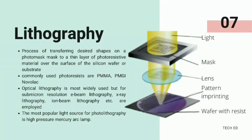Lithography is one of the most common semiconductor and MEMS fabrication technique processes. It is the process of transferring desired shapes on a photo mask to a thin layer of photoresistive material, commonly PMMA or NOVALEC, over the surface of the silicon wafer or substrate. Optical lithography is most widely used, but for submicron resolution, E-beam lithography, X-ray lithography, and ion-beam lithography are employed. The most popular light source for photolithography is the high-pressure mercury arc lamp.